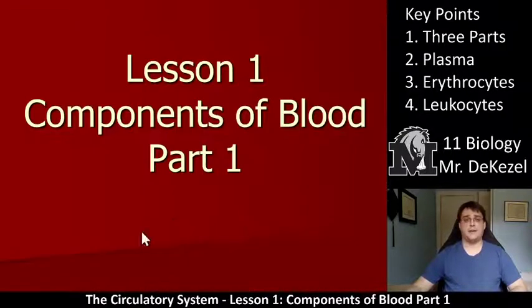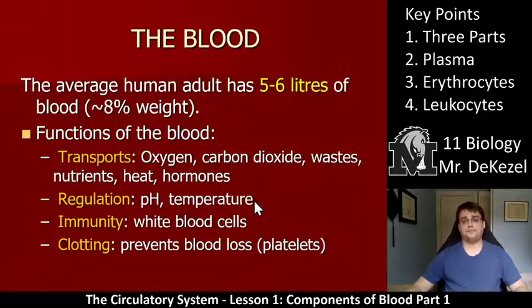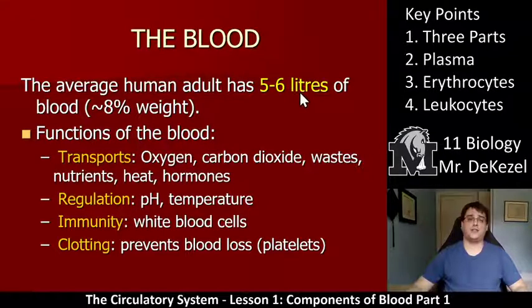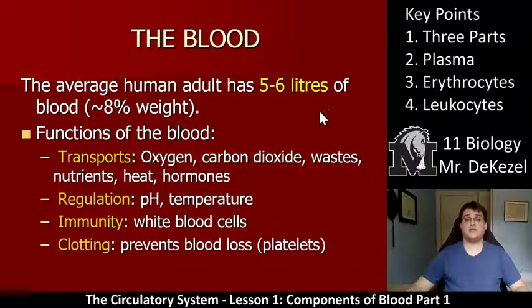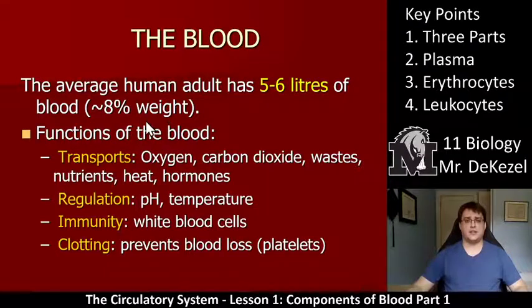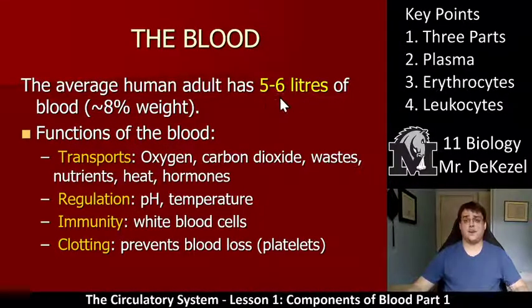But for today, we have lesson one: the components of the blood, part one. An average human has five or six liters of blood, which is approximately eight percent of your body weight. That was kind of shocking when I first saw that percentage, but liquids are very heavy, so it makes sense.